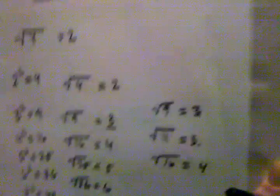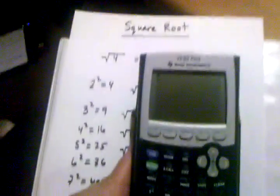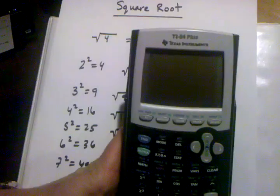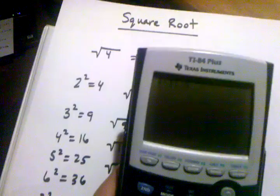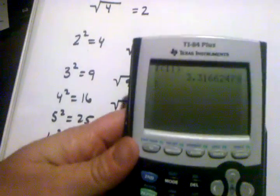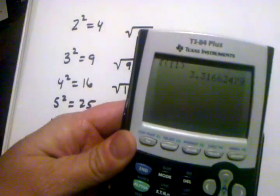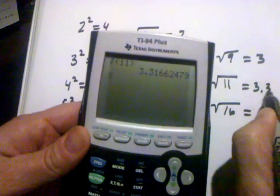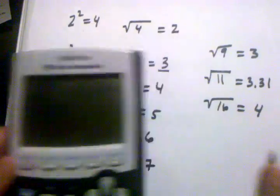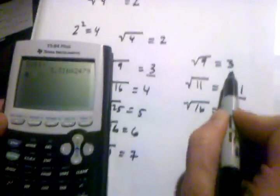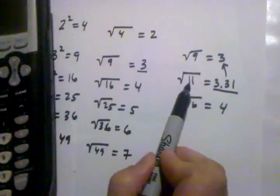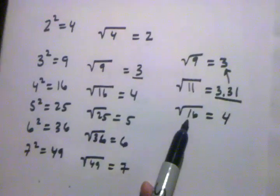If I take the square root of eleven on the calculator, I get three point three one and then it goes on forever with other numbers. Let's just put three point three one as our estimate. Sure enough, three point three one is a number slightly closer to three than to four, just like eleven is slightly closer to nine than it is to sixteen.